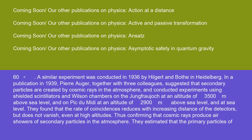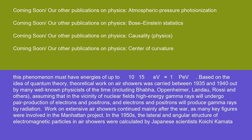They conducted experiments using shielded scintillators and Wilson chambers on the Jungfraujoch at an altitude of 3,500 m above sea level and on Pic du Midi at an altitude of 2,900 m above sea level and at sea level. They found that the rate of coincidences reduces with increasing distance of the detectors but does not vanish, even at high altitudes, thus confirming that cosmic rays produce air showers of secondary particles in the atmosphere. They estimated that the primary particles of this phenomenon must have energies of up to 10^15 eV equals 1 PeV.